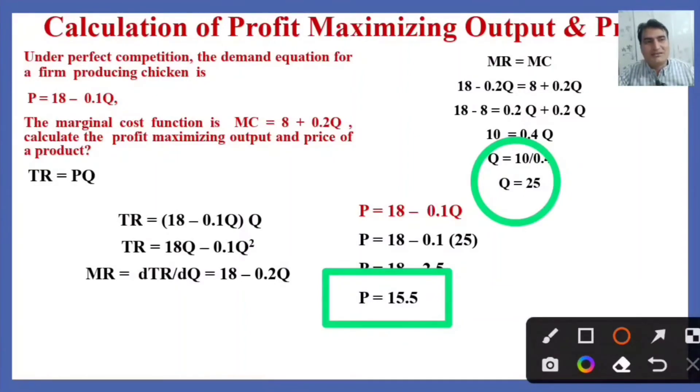So this is the quantity where the marginal revenue and marginal cost are equal. I hope it would be clear to you how a firm can achieve the maximum profit by producing the maximum output.